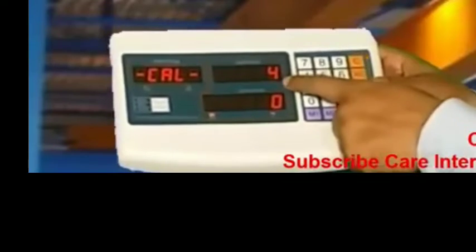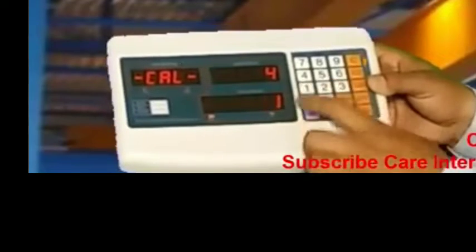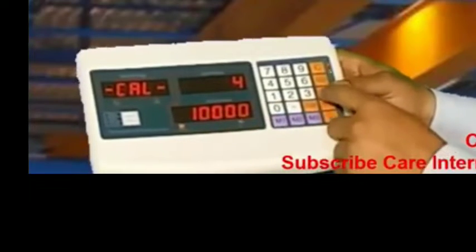We write full capacity 100kg. After the point, we write two zeros. After that, press tear button which shows CAL 5 on the screen.